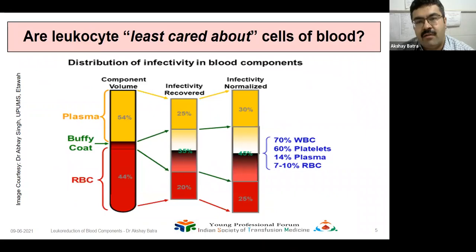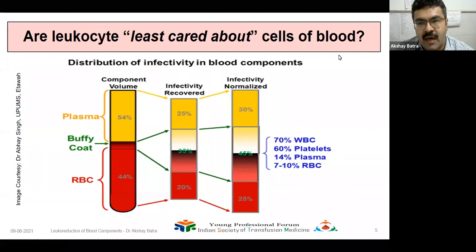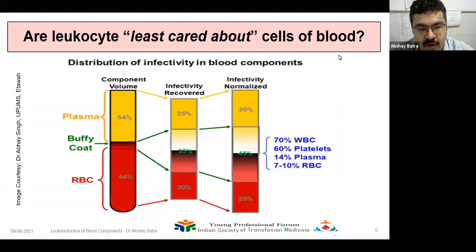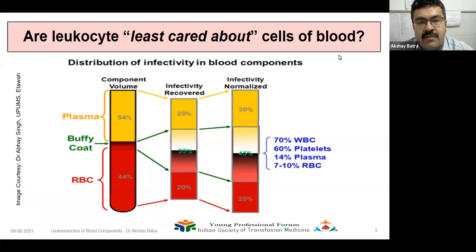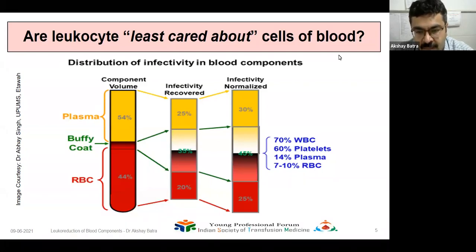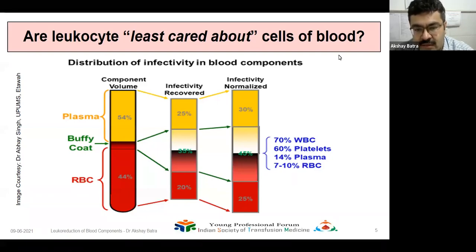Are leukocytes the least considered cells of blood? This is a distribution of infectivity in blood components. By volume, the buffy coat contains only about 2% of the cellular component, but the infectivity increases to 35% if recovered and normalized. The distribution of infectivity among blood components shows that 70% of infectivity is due to WBCs, some is due to platelets and plasma, and very few are due to red blood cells.